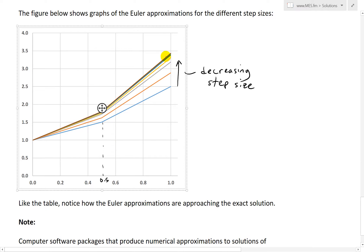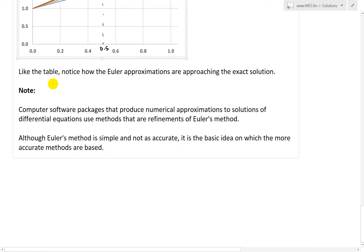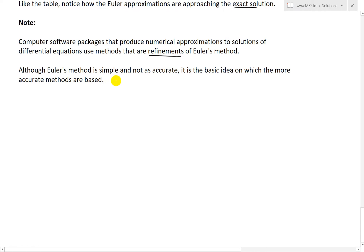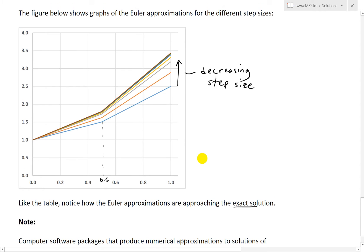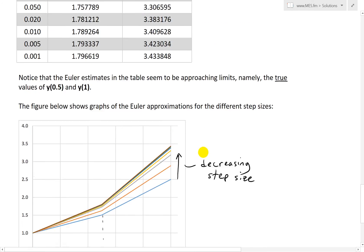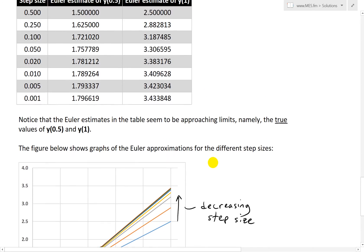And again, like the table, notice how the Euler approximations are approaching the exact solution. And one more note I just want to make before I end this video. Computer software packages that produce numerical approximations to solutions of differential equations use methods that are refinements of Euler's method. They don't always have to use this basic one. But although this method that I've shown is simple and not as accurate as some of the other more advanced approximations, it is still the basic idea on which the more accurate methods are based. So it all follows the same thing. You get little small increments, and then as you get smaller and smaller, it just requires more computing power, but the accuracy increases, and you get closer and closer to the exact solution.